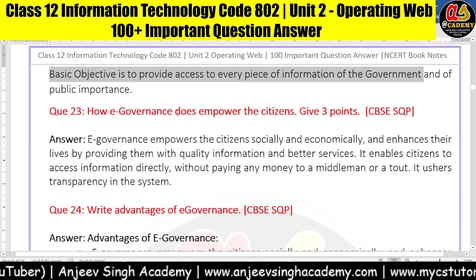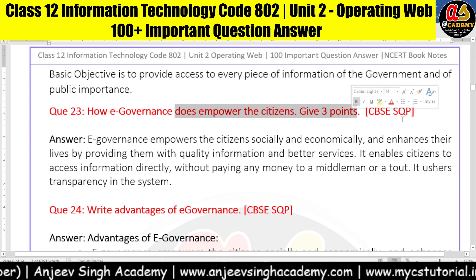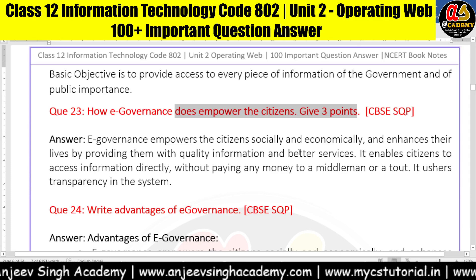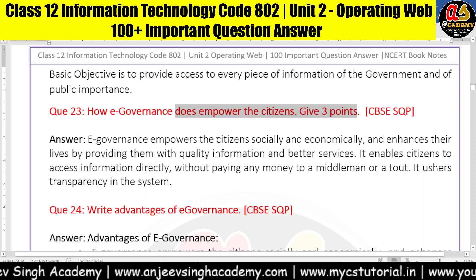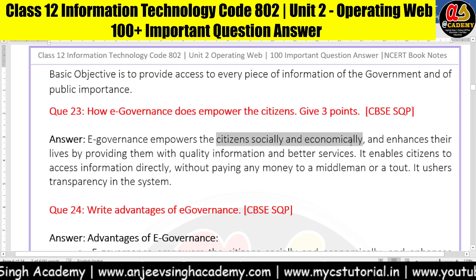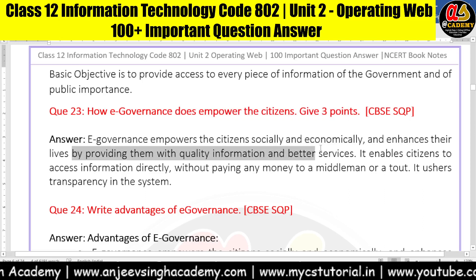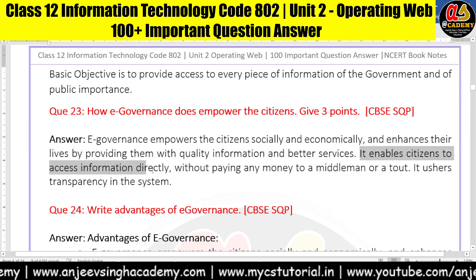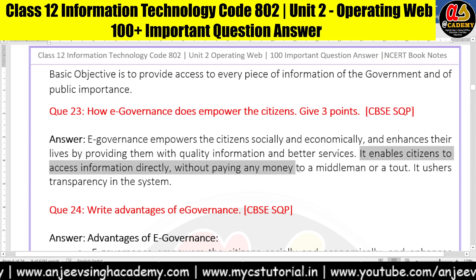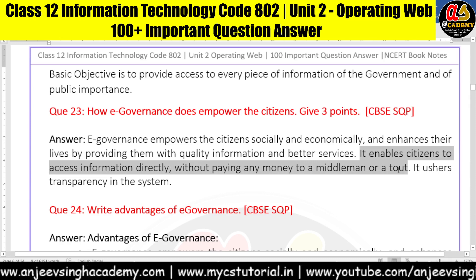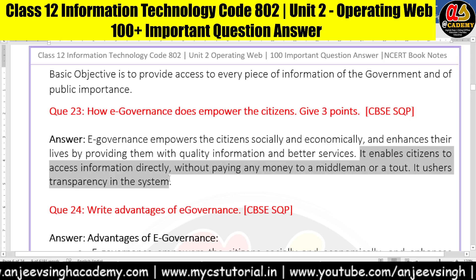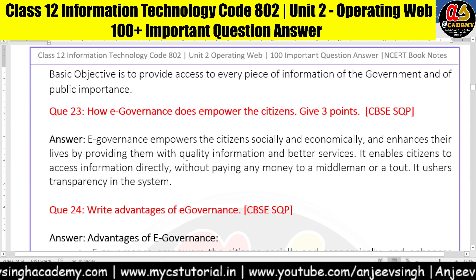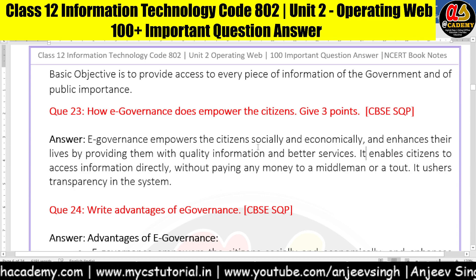How does e-government empower the citizens? Give three points. This question is from the CBS sample question paper. E-government empowers citizens socially and economically, and enhances their lives by providing them with quality information and better services. It enables citizens to access information directly without paying any money to the middleman. It asserts transparency in the system. These are the three key points you need to remember.